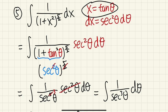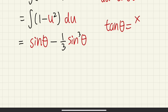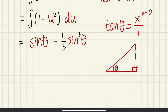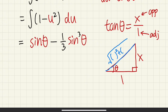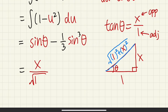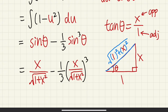Since tan(θ) = x, we draw a right triangle with theta, opposite side x, adjacent side 1, and hypotenuse = √(1 + x²). So sin(θ) = opposite over hypotenuse = x / √(1 + x²). Substituting back: sin(θ) − 1/3 sin³(θ) becomes x/√(1 + x²) − 1/3 · [x/√(1 + x²)]³. We'll continue on the next page.